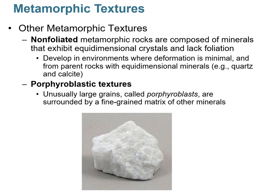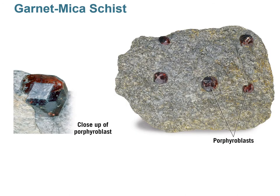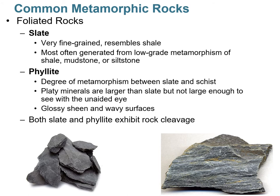Non-foliated metamorphic rocks are composed of equidimensional minerals and lack foliation. They typically form in environments where there's less pressure or deformation. White marble is an example of a non-foliated metamorphic rock. Then there are porphyroblastic textures — metamorphic rocks with really large minerals called porphyroblasts surrounded by a fine-grained matrix of much smaller minerals. Those giant garnets are porphyroblasts, and in many places they can be of gem quality.